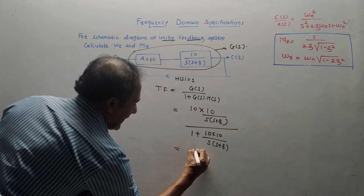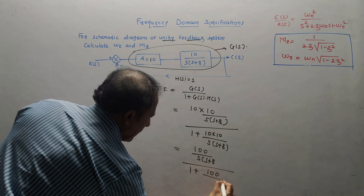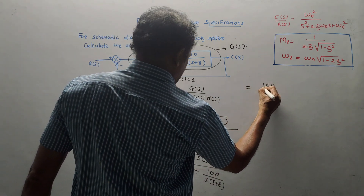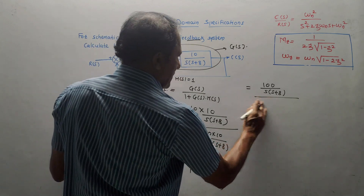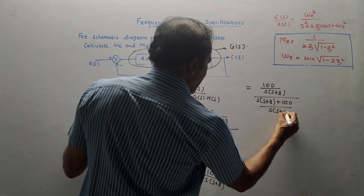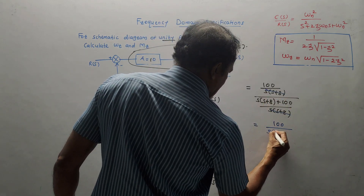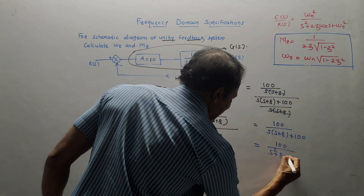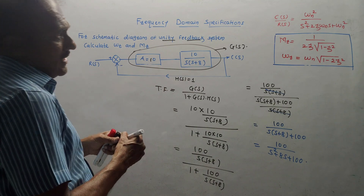Simplifying: it is 100 upon s(s+8) divided by [s(s+8) + 100] / s(s+8). The s(s+8) terms cancel, giving the transfer function = 100 upon s² + 8s + 100.